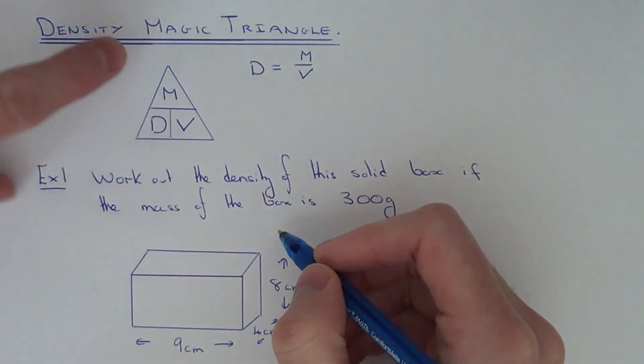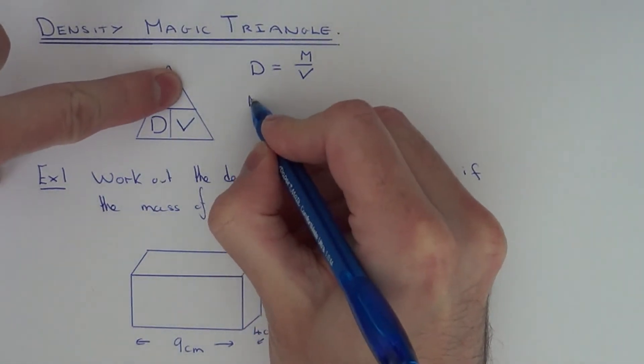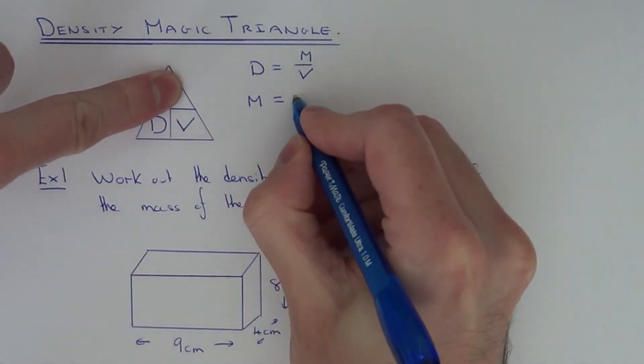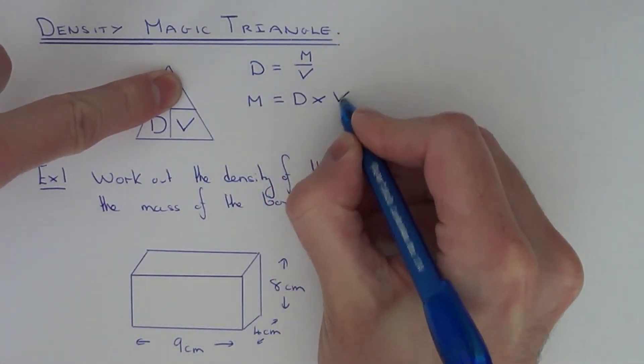If you needed to calculate the mass, you'd cover up the mass in the triangle. Since these are side by side, you'd do density multiplied by volume.